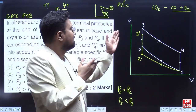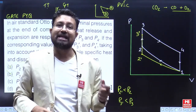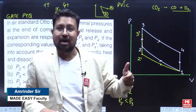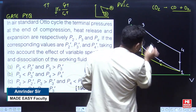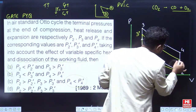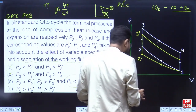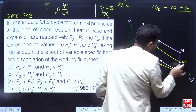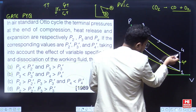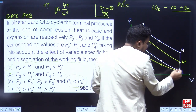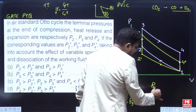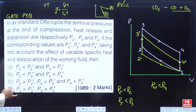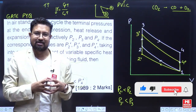CO2 is a triatomic gas, while CO and O2 are diatomic gases. Diatomic gases have a higher gamma value, so dissociation increases gamma, making the expansion curve steeper. Starting from 3' and following this steeper curve, we end up at 4' which is below point 4, meaning p4' is less than p4. The option stating p4' > p4 is wrong, so option D is the correct answer.